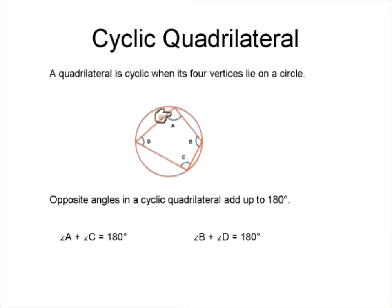Angle A and angle C are opposite to each other. D and B are opposite to each other, and they add up to 180 degrees. So, that's one of the properties of a cyclic quadrilateral.